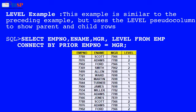LEVEL Example: This example is similar to the preceding example, but uses the LEVEL pseudo-column to show parent and child rows. Below is an SQL statement: SELECT employee_number, employee_name, manager, LEVEL FROM employee CONNECT BY PRIOR employee_number = manager.